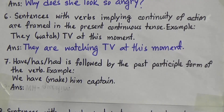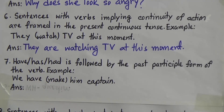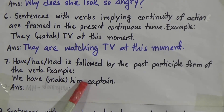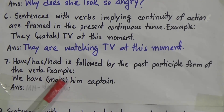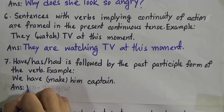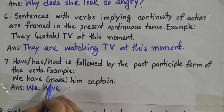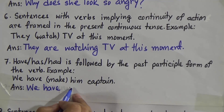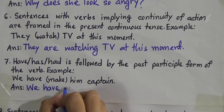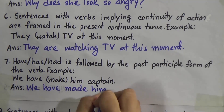Rule number 7: have, has, or had is followed by the past participle form of the verb. Example: 'We have made him captain.' The verb is 'make' and there is 'have,' so we write the past participle 'made.' Answer: 'We have made him captain.'